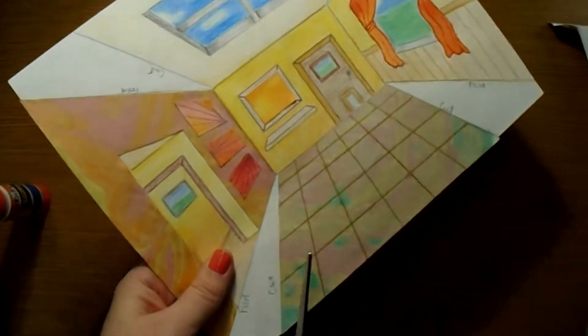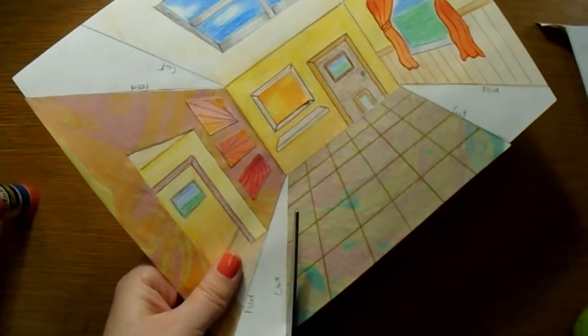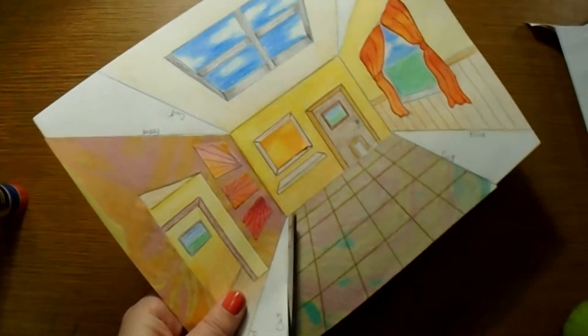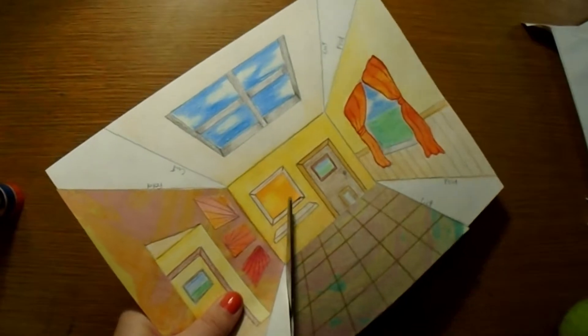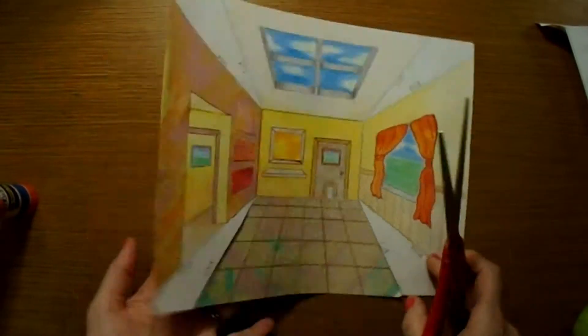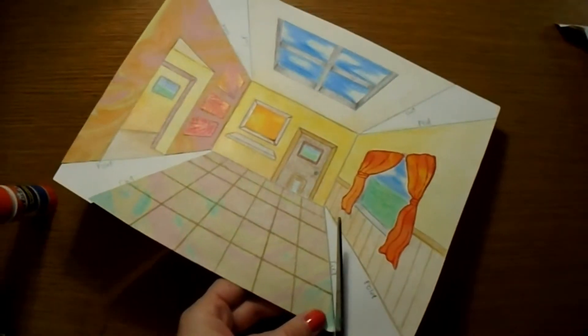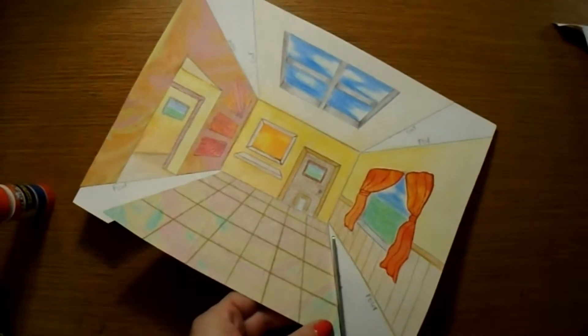Scissors and glue are in the middle of the room. So I'm going to carefully cut along both sides of the floor and I'm going to cut until I get to the corner of the back wall. I'm going to do that on both sides.